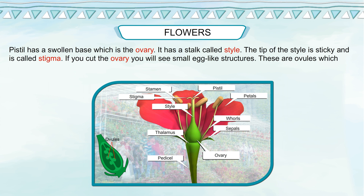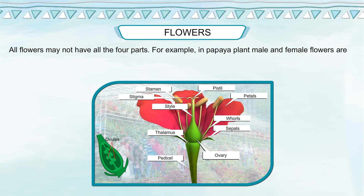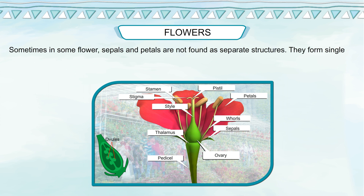If you touch the tip, the powdery substance rubbed off on your fingers is pollen. The pistil has a swollen base which is the ovary. It has a stalk called the style. The tip of the style is sticky and is called the stigma. If you cut the ovary, you will see small egg-like structures called ovules, which later develop into seeds. All flowers may not have all four parts. For example, in papaya, male and female flowers are on different plants. Sometimes sepals and petals are not found as separate structures — they form a single type of structure called tepals. Example: the lily flower.